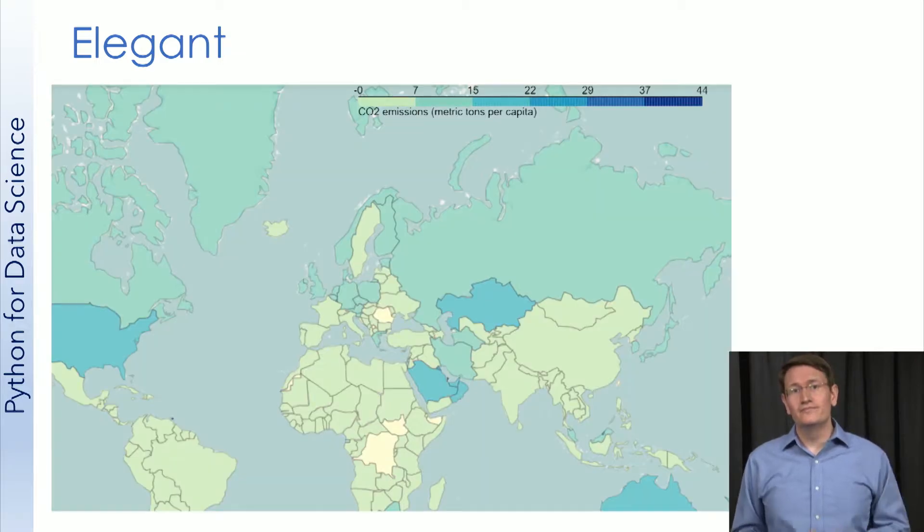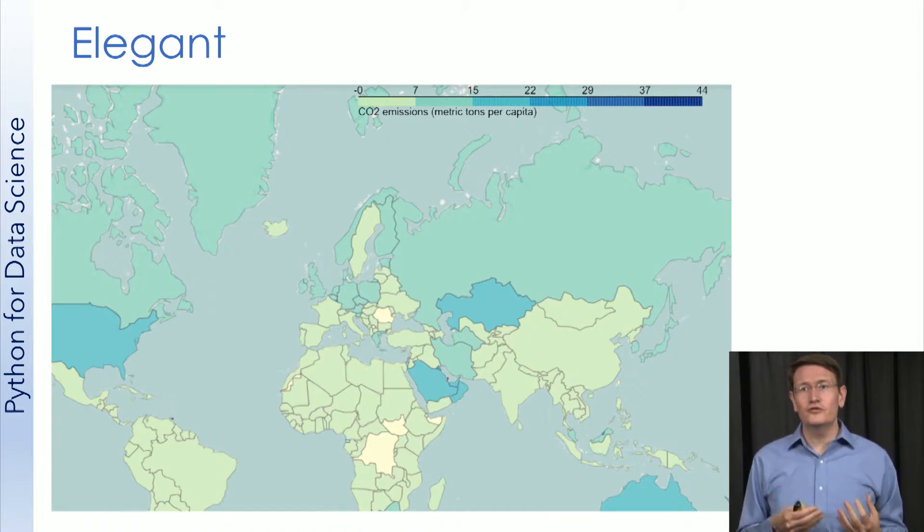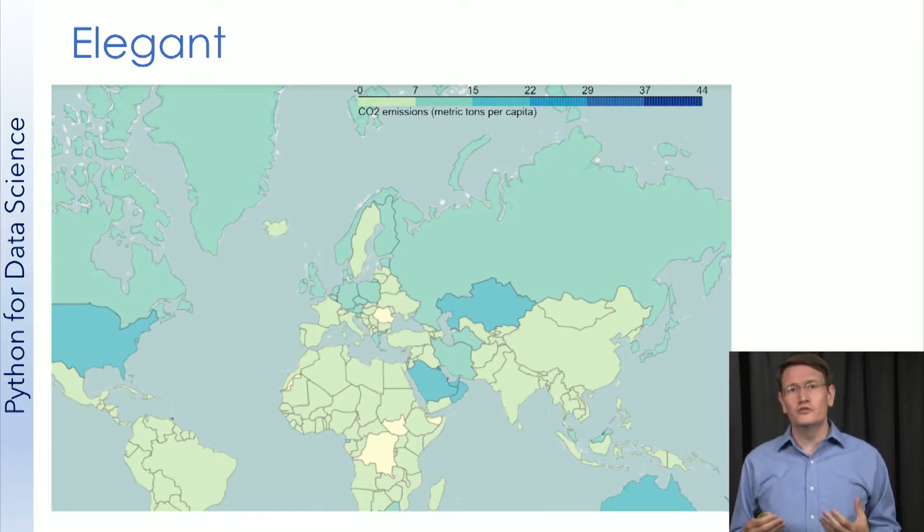For example, later in this week, you'll be creating an overlay like this. Take a moment to take it in. There are elements of this which are elegant. The use of an overlay on a map helps an observer see the different countries quickly. The color coding to show numeric data helps the viewer quickly interpret results.